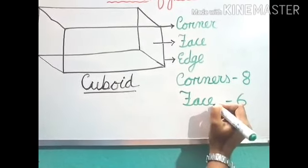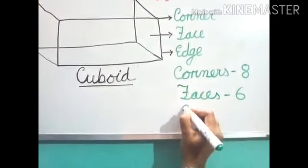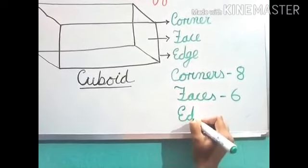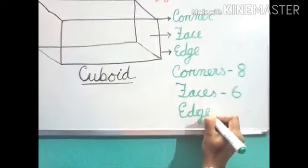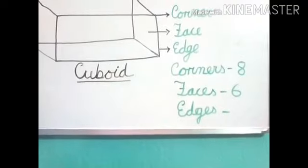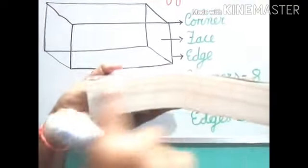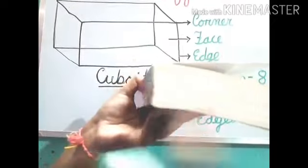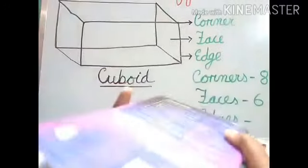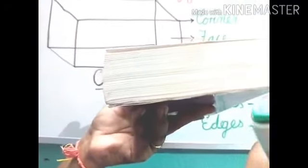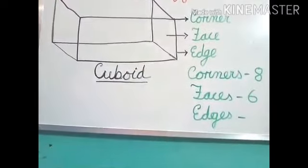Or we can write it faces. 1, 2, 3, 4, 5, 6, 7, 8. And this side, 9, 10, 11, 12. Total, 12 edges.